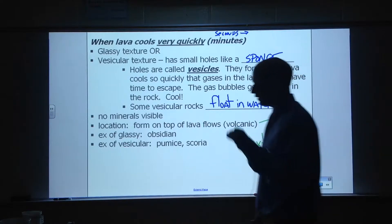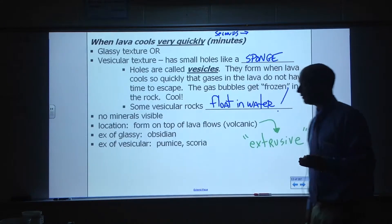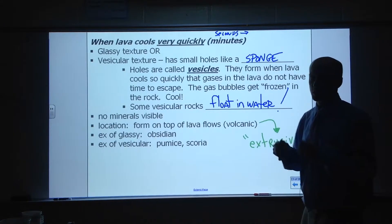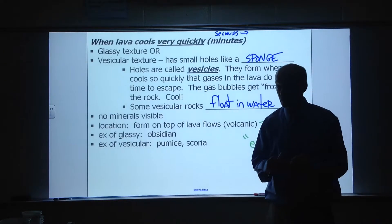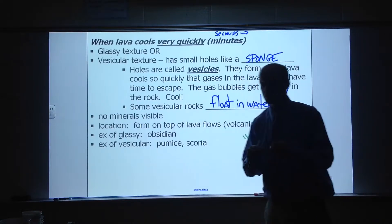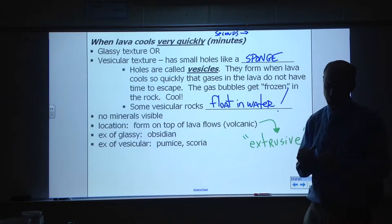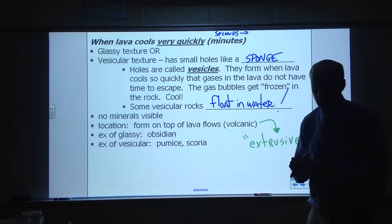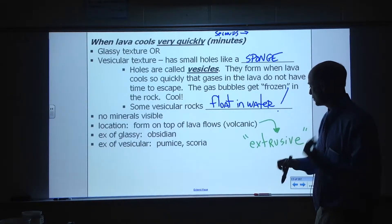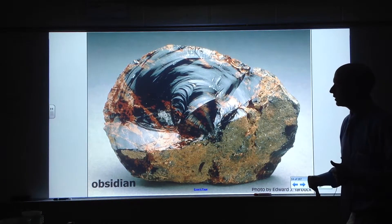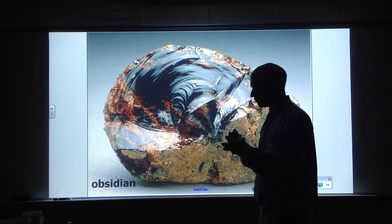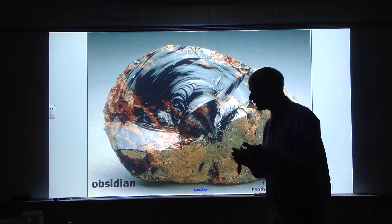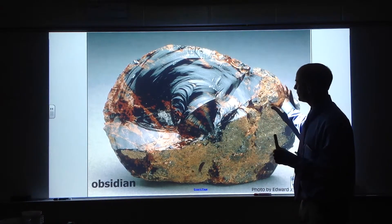Fast cooling — only lava on the surface of Earth cools quickly. When it cools in seconds to minutes, you can get a glassy texture. This is obsidian, also known as volcanic glass. The lava cools so quickly that the crystals don't have a chance to form any crystal shape at all, and you get this volcanic glass. Obsidian is often very black, though this example has tiger-stripe coloring. You can also have a vesicular texture.